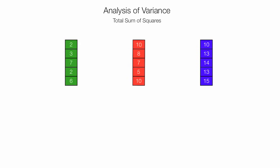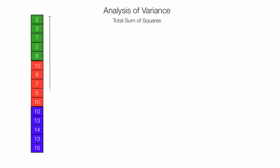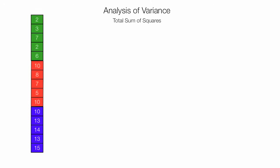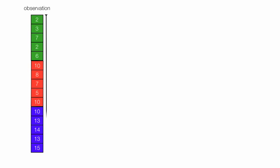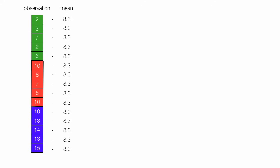Now I'm going to calculate total sum of squares. I take all three samples — the green, red, and blue — and treat them as one sample, and I calculate the variance from the mean and its total sum of squares. I take all these observations, calculate the mean for all of them, and it turns out to be 8.3. Now I take each individual observation minus the mean: 2 minus 8.3, 3 minus 8.3, and so on. 2 minus 8.3 equals negative 6.3.